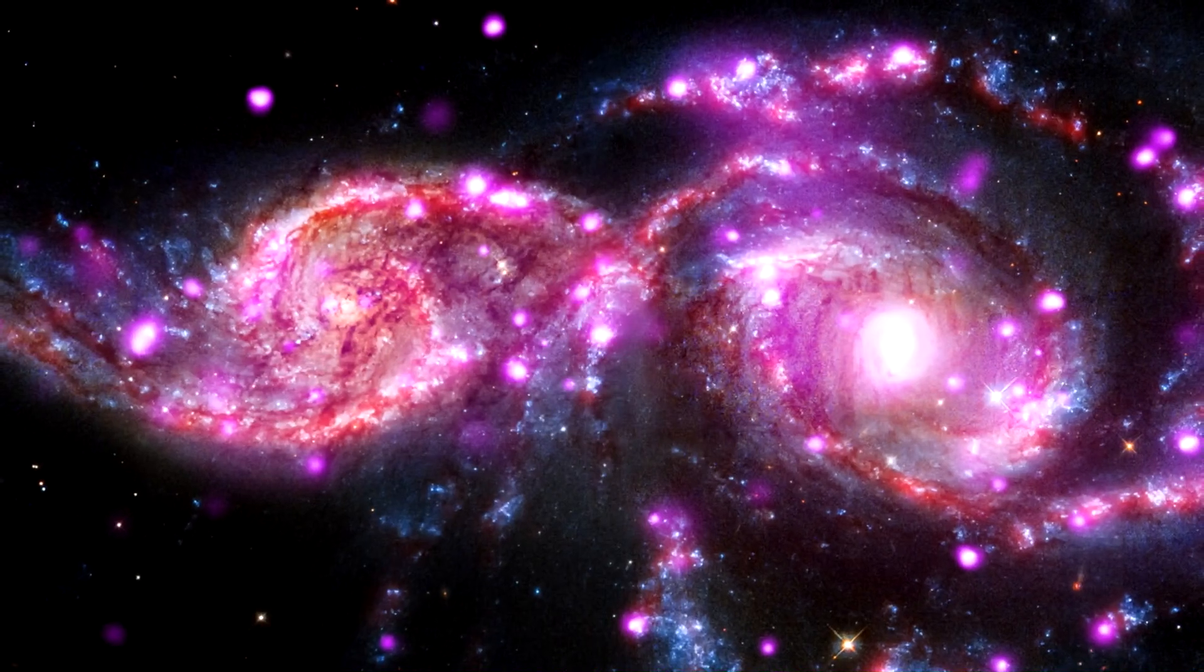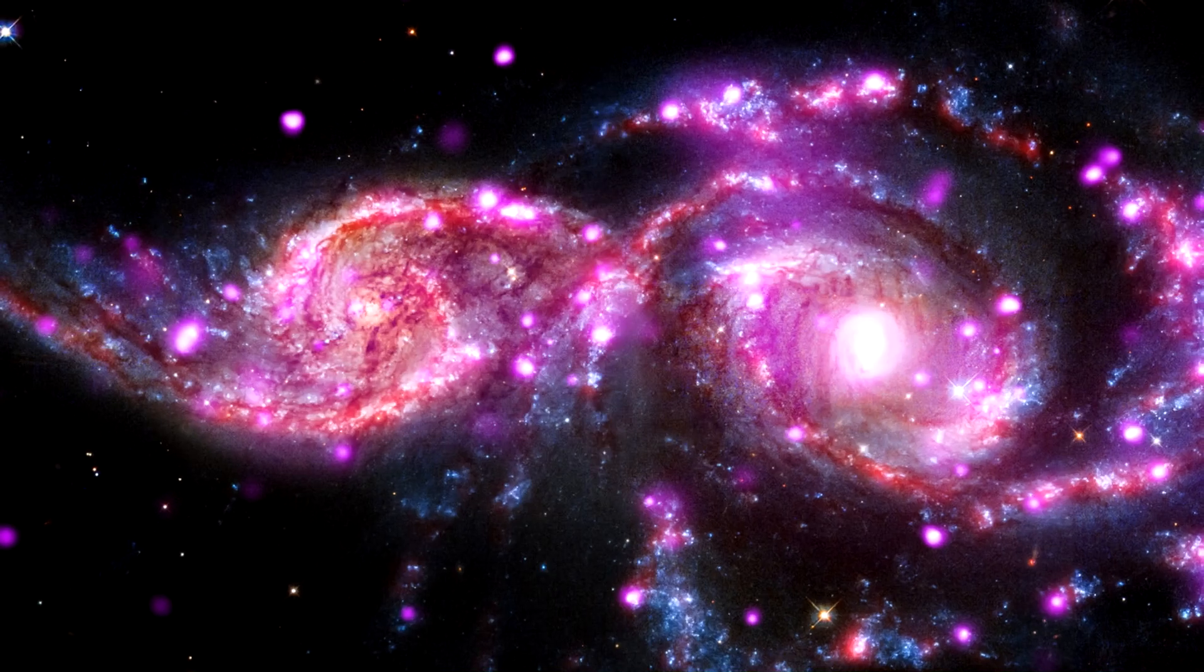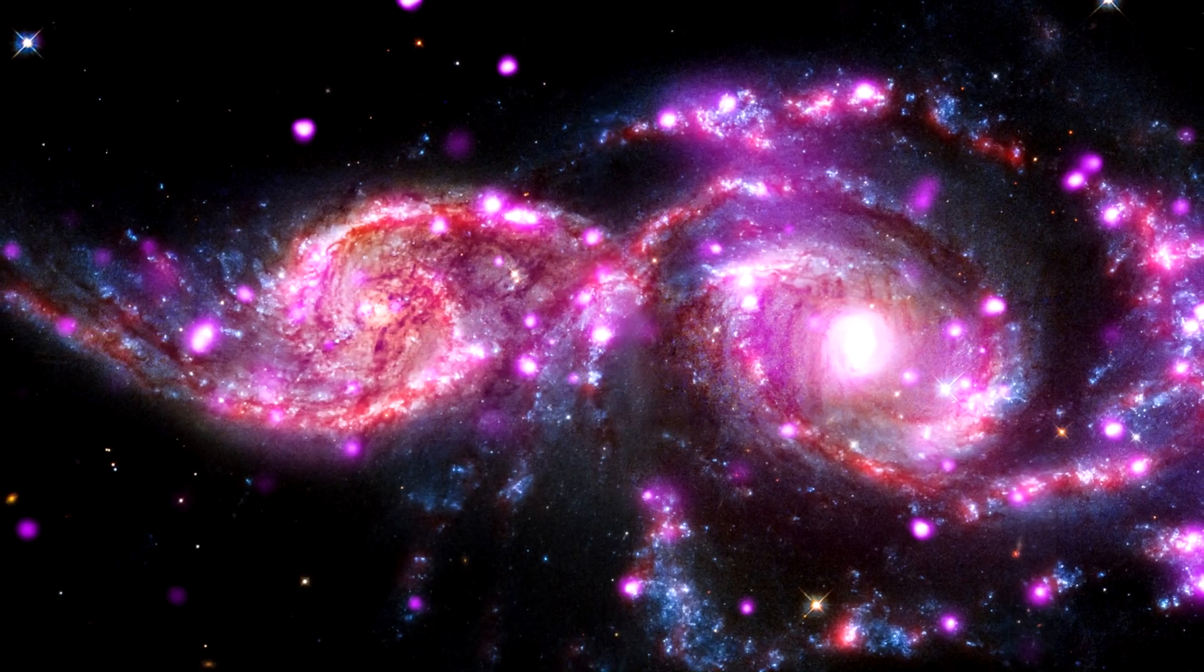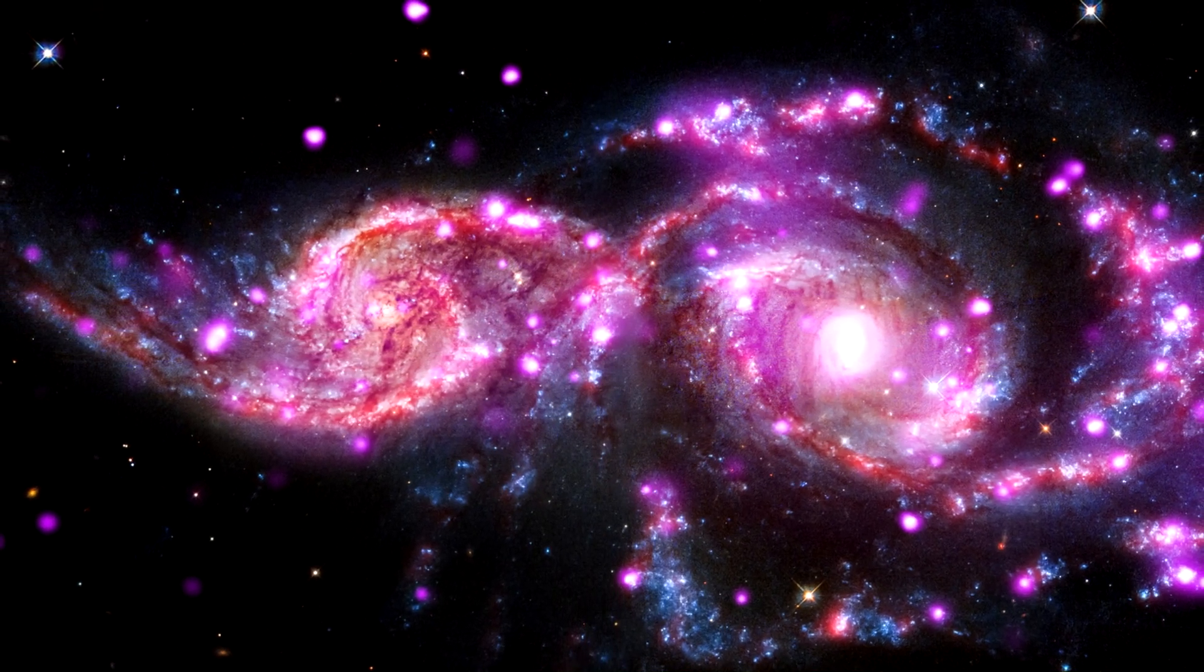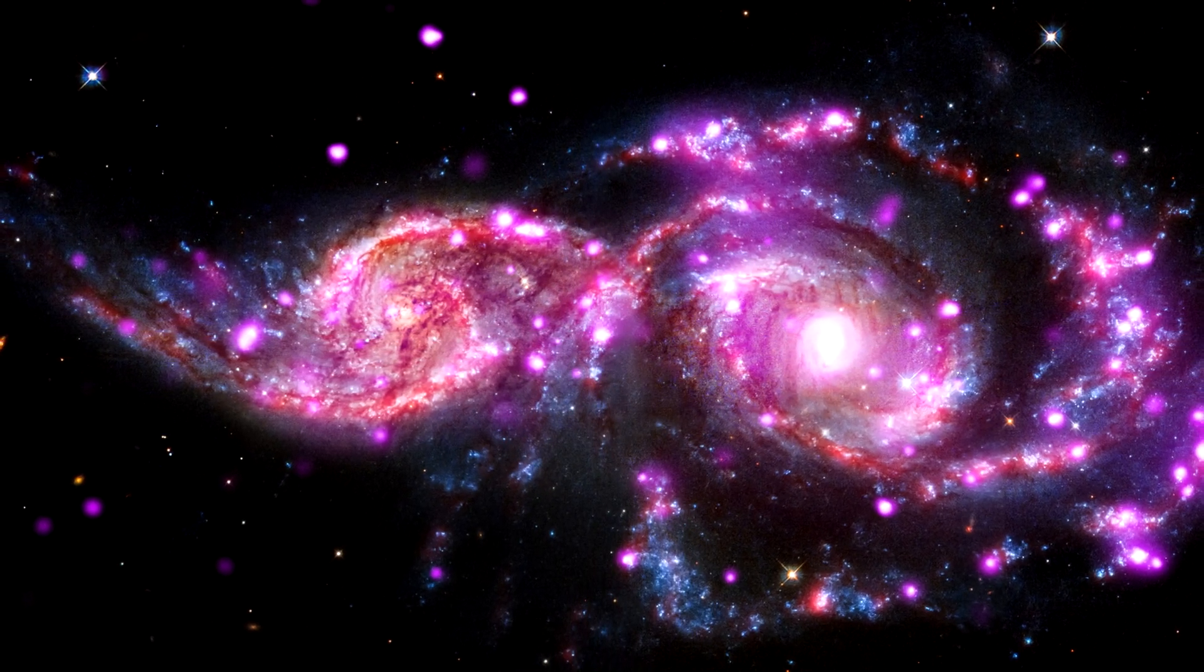There's also a theory that the Great Attractor is the result of a collision between two or more massive galaxies. This collision would have created a gravitational anomaly that's pulling in other galaxies towards it at such high speeds. However, this theory doesn't explain why the Great Attractor is pulling galaxies towards it at such a high speed.